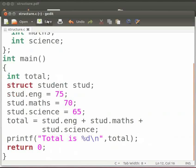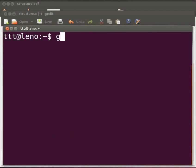Now click on save. Let us execute the program. Please open the terminal window by pressing ctrl, alt and t keys simultaneously on your keyboard. To compile, type gcc space structure.c space hyphen o space struct, and press enter.